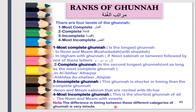The ranks of Ghunnah: the most complete Ghunnah refers to the longest Ghunnah, and it is apparent on the noon sakin and meem sakin that follow the letters of idgham, which are ya, meem, noon, waw — the letters of ibqa. Then you have the complete Ghunnah, which is the longest Ghunnah after the first category, and it is apparent in the noon sakin on which we make ikfa, specifically with the letter ba.